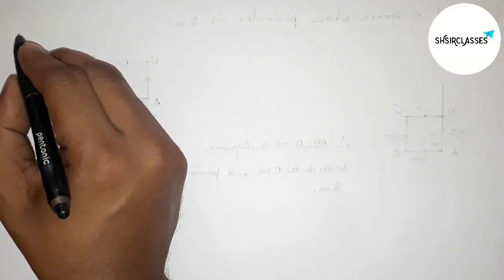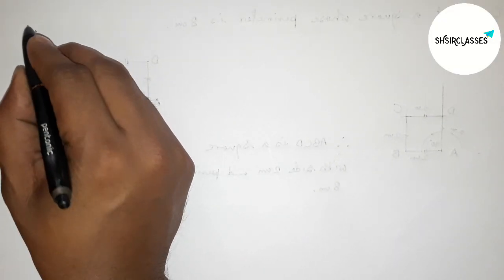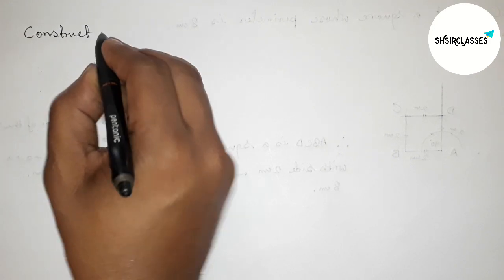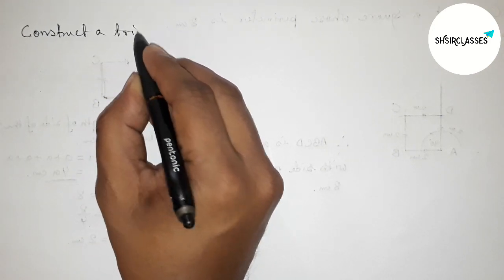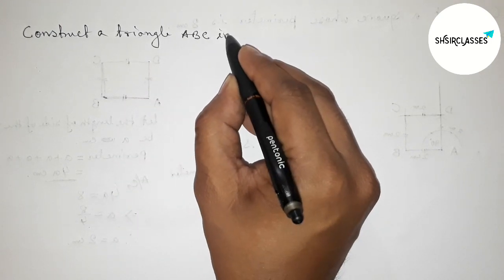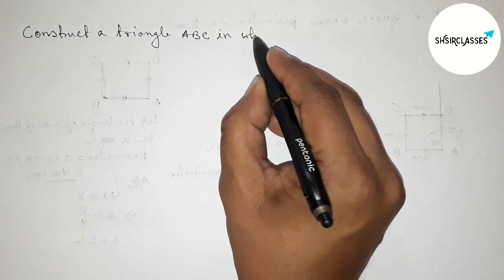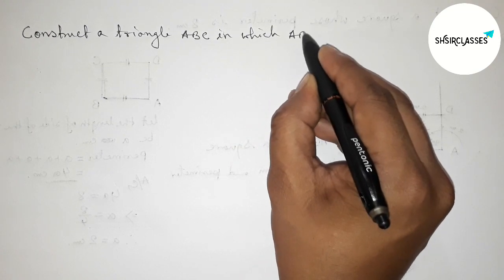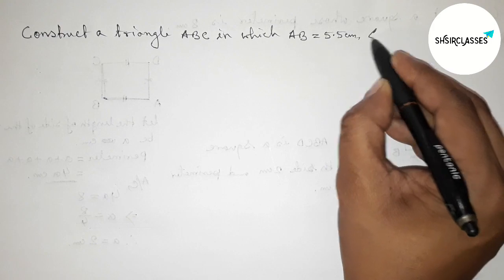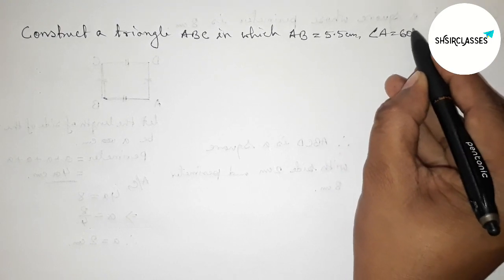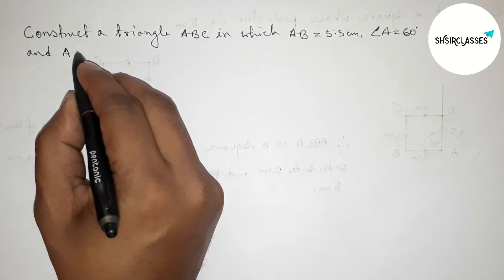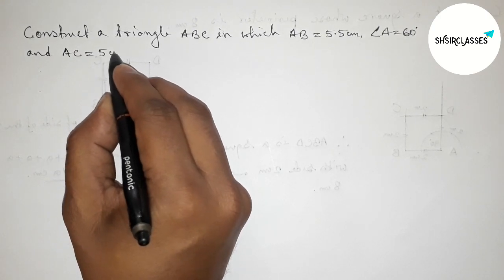Hi everyone, welcome to Essay Share Classes. Today in this video we have to construct a triangle ABC in which AB equals 5.5 centimeter, angle A equals 60 degrees, and AC equals 5 centimeter. Please watch the video till the end. Let's start.